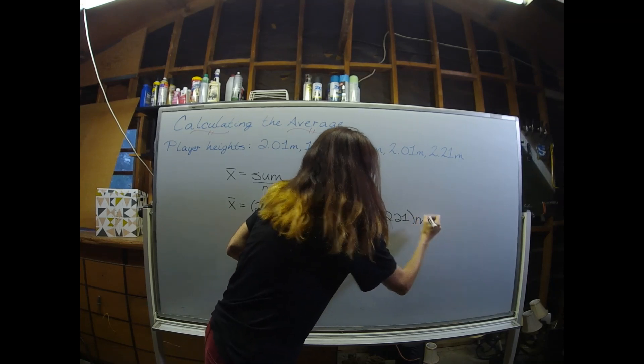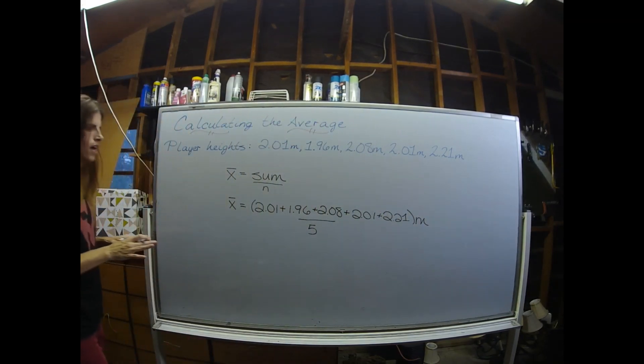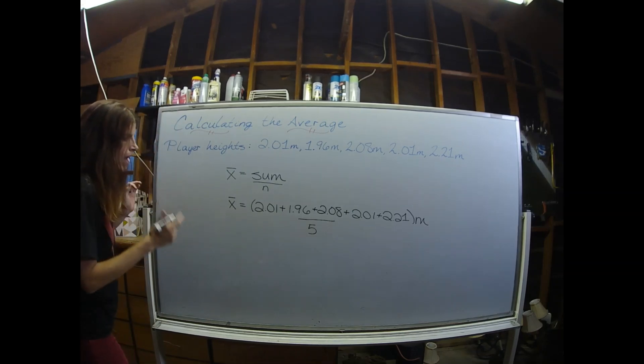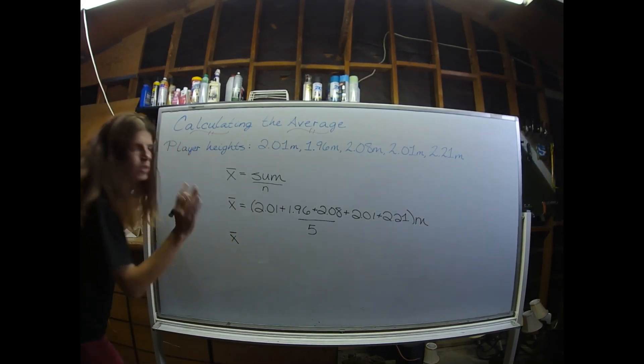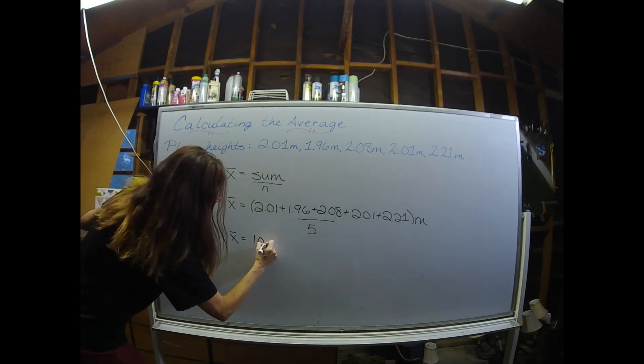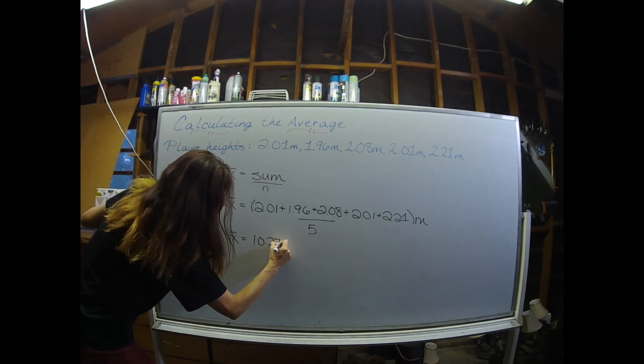I'm going to put the units of meters on the outside there, since all of the values have units of meters. Now, when I summed it up, and you can absolutely do this in one step, I've got 10.27 meters.